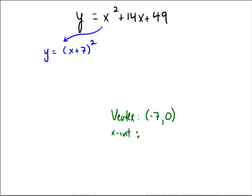Again, this would also be the x-intercept, because this hits the x-axis. That's negative 7, 0.